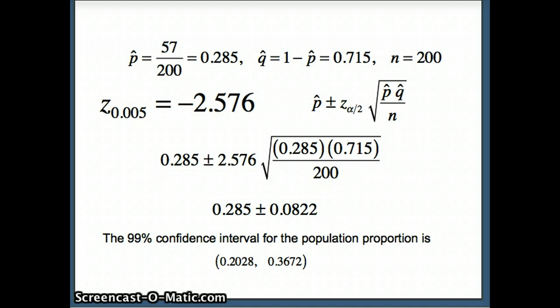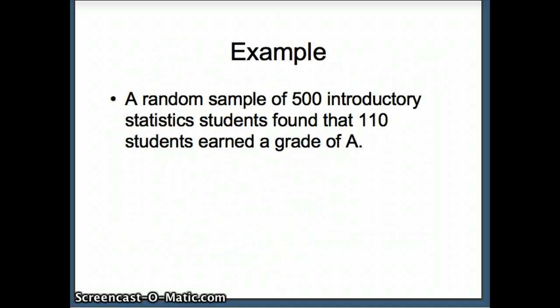So let's look at one more question. We're going to take a random sample of 500 introductory statistics students and we will find that 110 of them earned a grade of A. So we don't have all introductory statistics students across the country; we just have a random sample of 500. So 110 out of 500 getting A's will be our statistic.